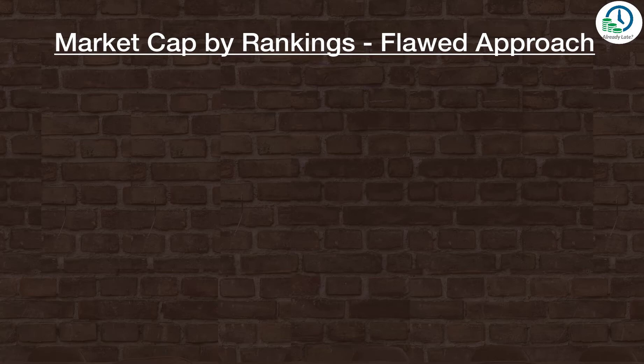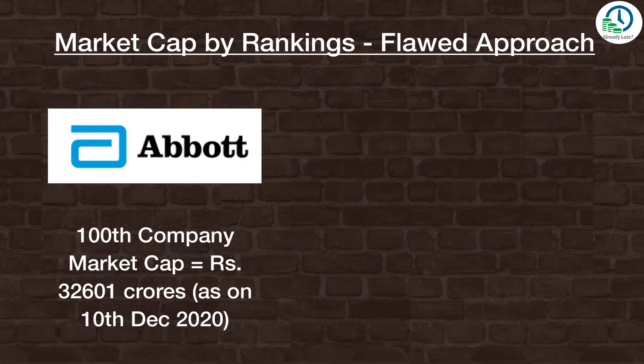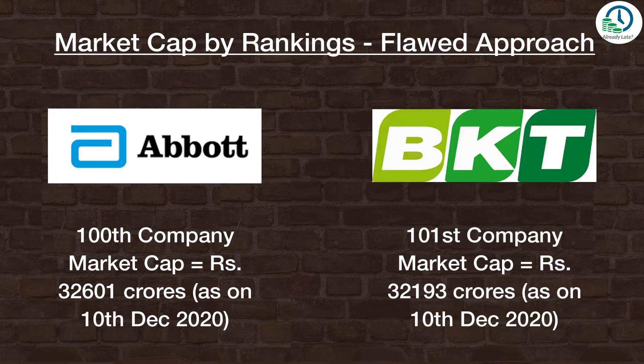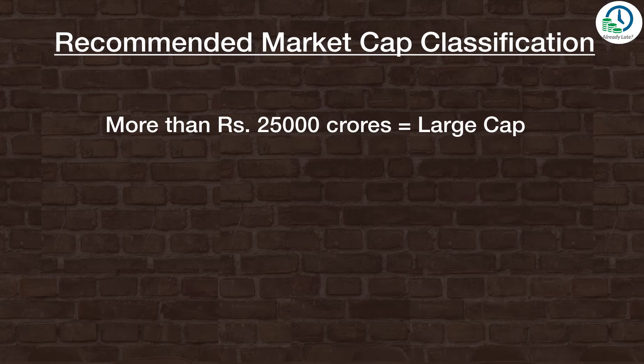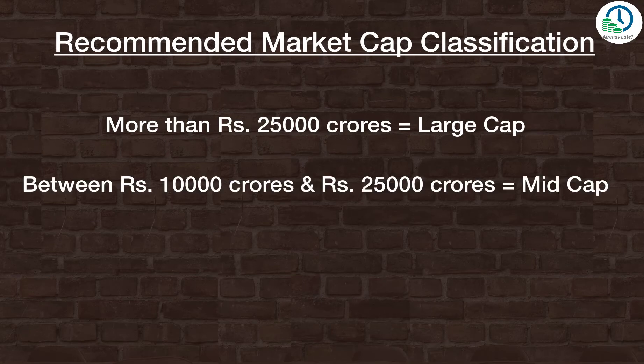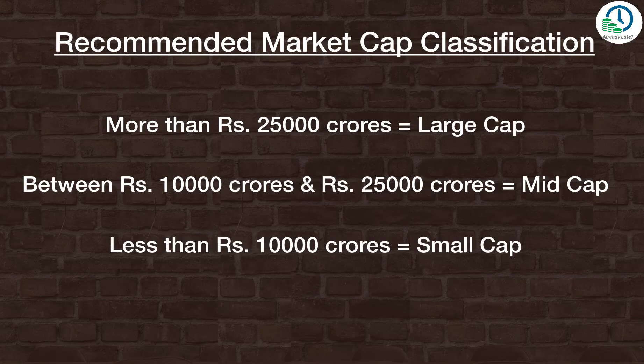This might not be the most accurate way of categorizing. For example, at current market levels the market cap of the 100th share is around ₹32,600 crores and the 101st company has a market cap of ₹32,200 crores. Is it fair to call one large cap and the other mid cap? Any rigid classification is inaccurate as market cap changes every day. My advice would be to consider stocks with market cap over ₹25,000 crores as large cap, those between ₹10,000 and ₹25,000 crores as mid cap, and the rest as small cap.